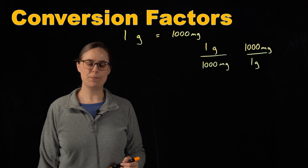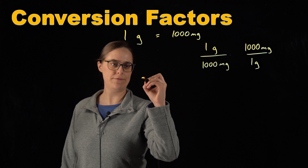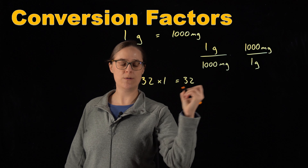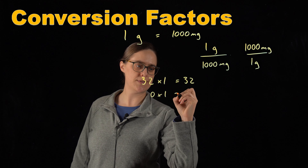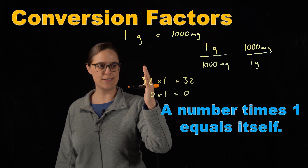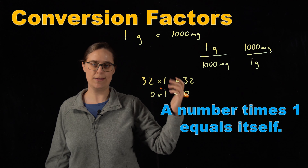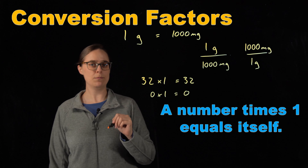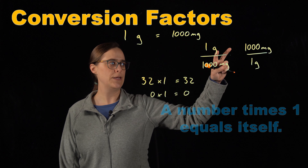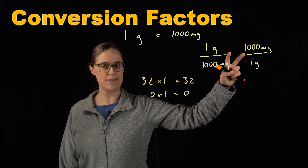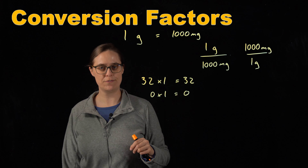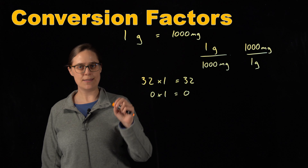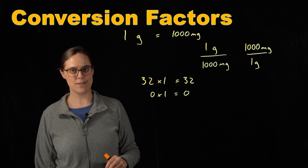Now let's think about what happens if we multiply a value by 1. For example, 32 times 1 equals 32, or 0 times 1 equals 0. The rule is some number times 1 equals that original number. This means we can multiply any value by either of these fractions from our unit conversion factor and not actually change the value. This is how we're going to use the factor label method.